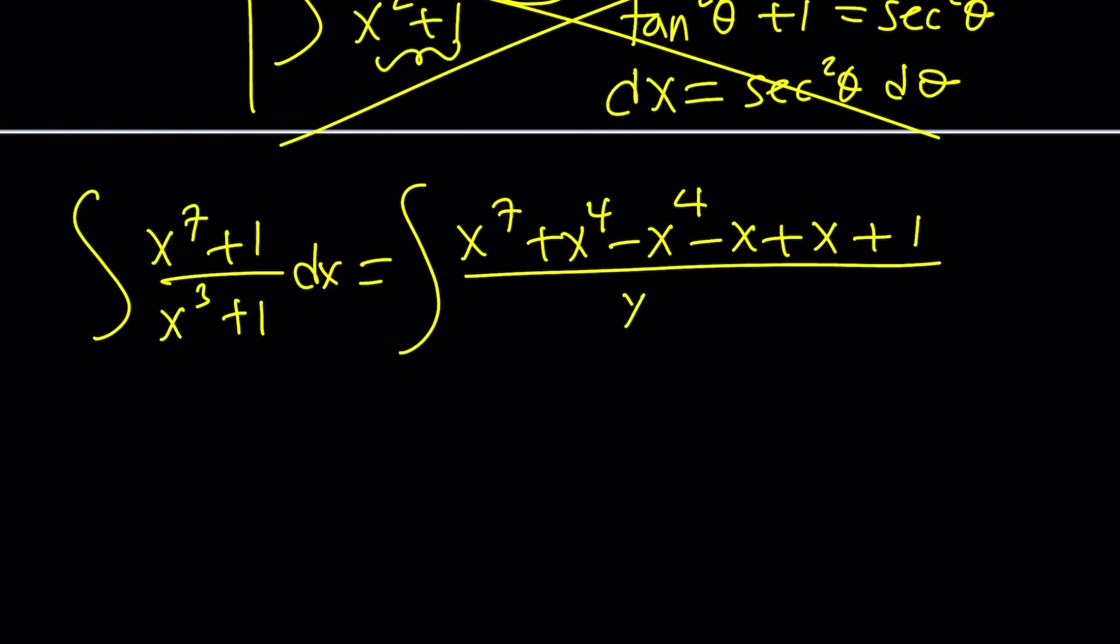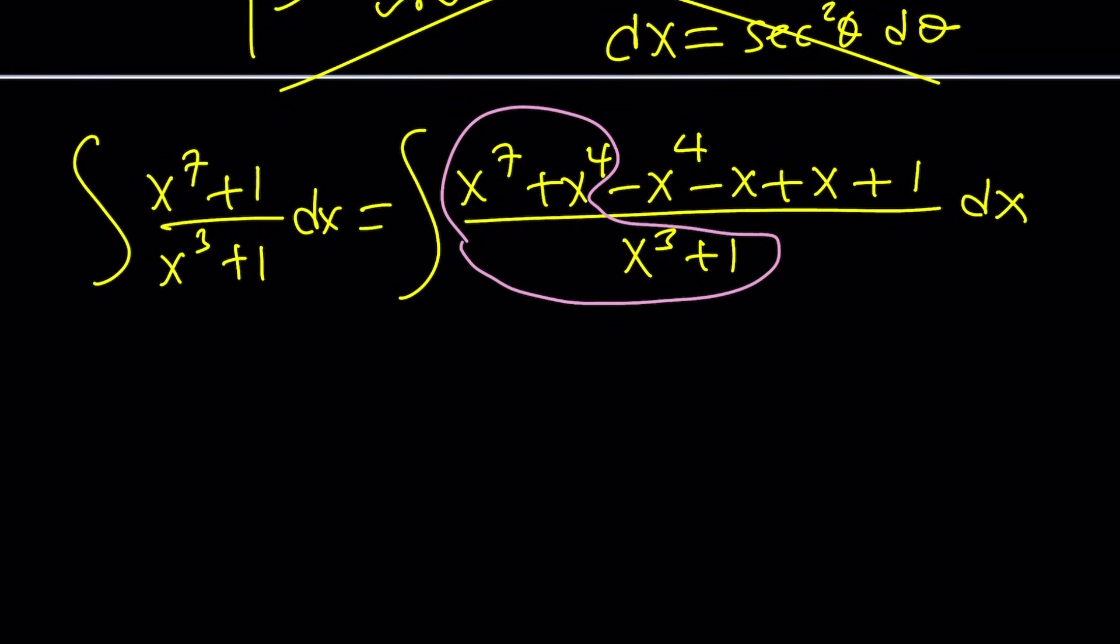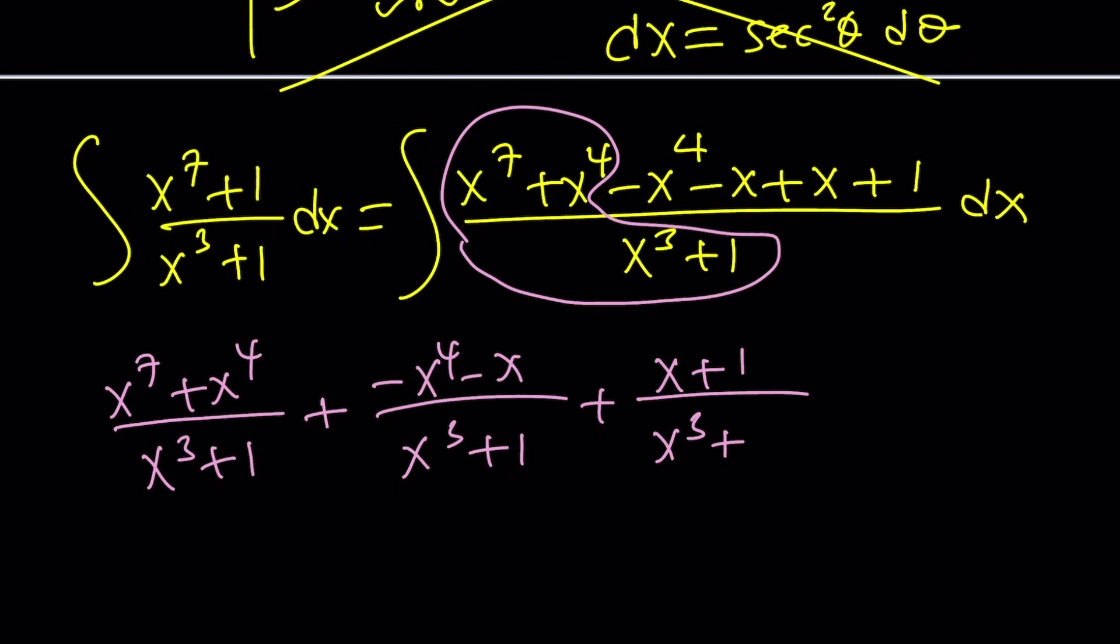This is really cool. You know why? Because now we can split it up. And when we split it up, it's going to be really meaningful. Of course, that's why we added these terms. Take a look at this first piece. You'll hopefully get what I'm talking about. So the first one is going to be x to the seventh plus x to the fourth divided by this. Let me just separate these first. And then I'll be getting negative x to the fourth minus x divided by x cubed plus one. And then plus x plus one divided by x cubed plus one.